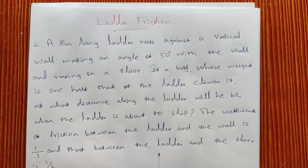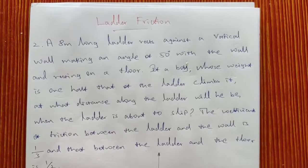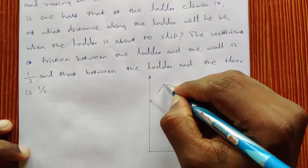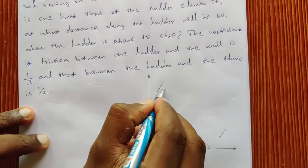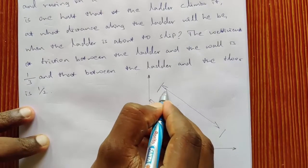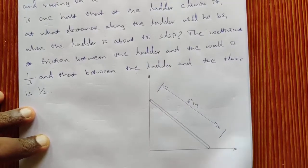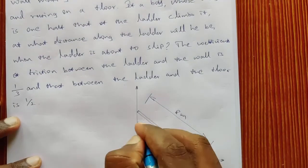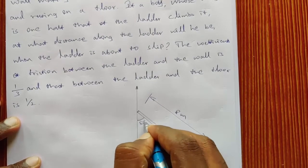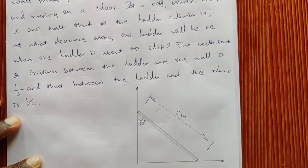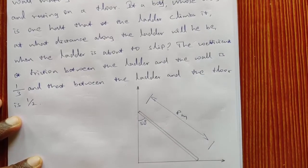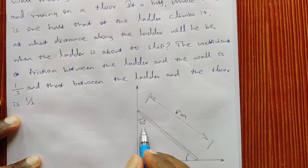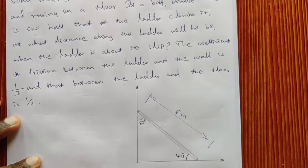The problem has no drawing given, so for simplicity let us construct one. A ladder of total length 8 meters rests against a vertical wall making an angle of 50 degrees — note the angle is given from the wall. In the previous problem we took the angle from the floor, so let us calculate that: 180 minus 90 minus 50 gives us 40 degrees.